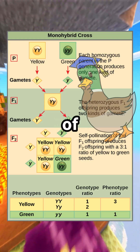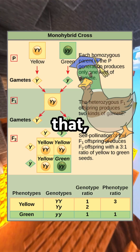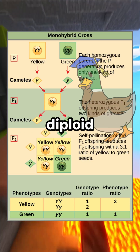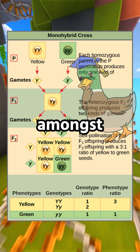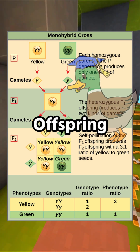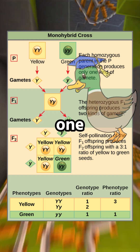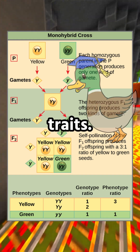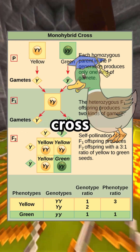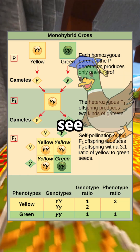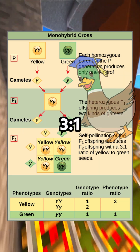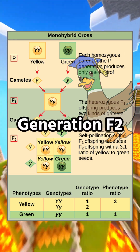For the Law of Segregation, Mendel theorized that during meiosis, genes of diploid organisms separate equally amongst their haploid gametes. Offspring are equally likely to receive one of two traits. That's why, in a monohybrid cross between true breed parents, we see that predictable phenotypic 3 to 1 ratio in Generation F2.